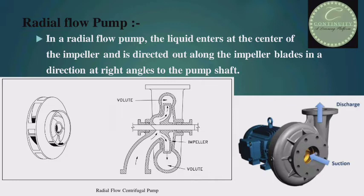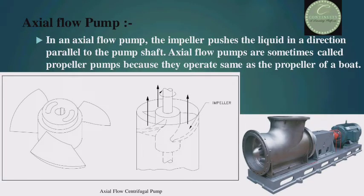Now, the axial flow pump. In an axial flow pump, the impeller pushes the liquid in a direction parallel to the pump shaft. Axial flow pumps are sometimes called propeller pumps because they operate the same as the propeller of a boat. In the picture, you can see that liquid is being discharged in a direction parallel to the pump shaft — that is, axially.